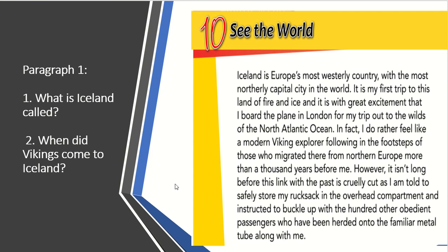After discussing this task, can you find some nouns in this text? Here we have: Iceland, Europe, country, excitement — notice the suffix "-ment" refers to a noun. The plane — we have the article before it. London is a city. Ocean is also a place noun. We also have Europe. Please try to highlight these nouns in your student book in the first paragraph.